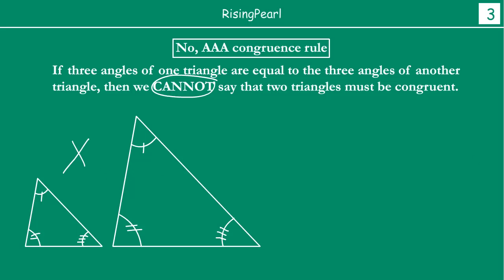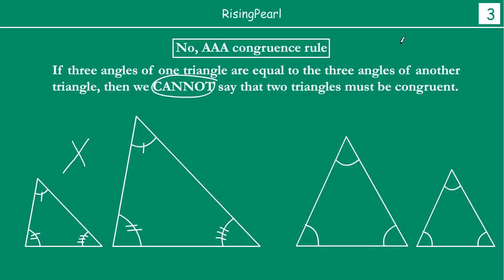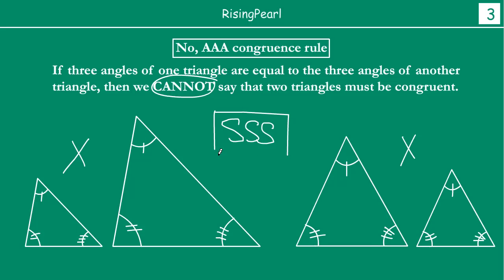Similarly, let us take one other example before we wrap up. We have drawn triangles where this angle is equal to this angle, this angle is equal to this angle, and this angle is equal to this angle. Even though all corresponding angles are equal, we can clearly see these two triangles are not congruent. This is very important. SSS, however, is a valid congruence rule — if 3 sides of one triangle are equal to the corresponding 3 sides of another triangle, this will always be valid.